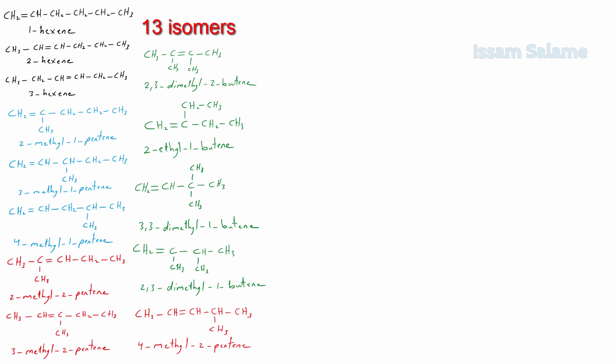If you could draw more isomers that I didn't mention, please write me a comment. Now I'm going to start drawing cycloalkanes with the formula C6H12.